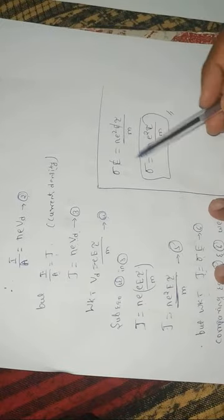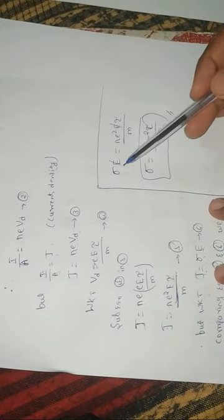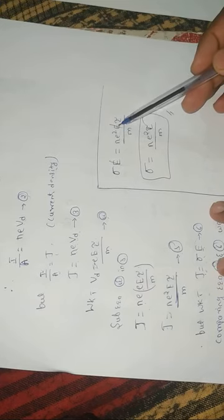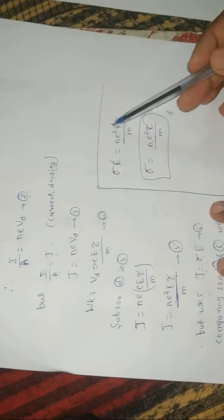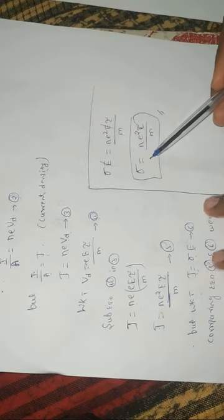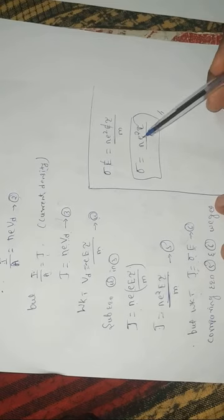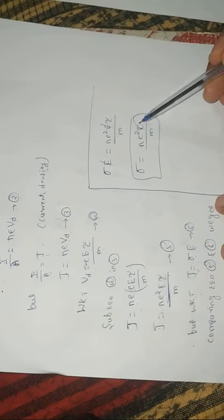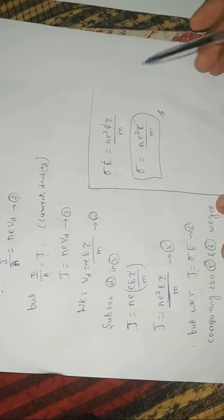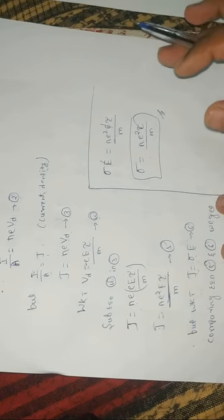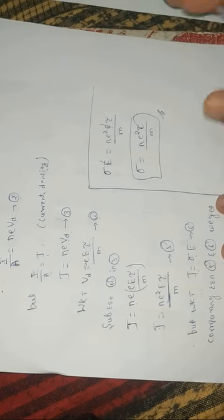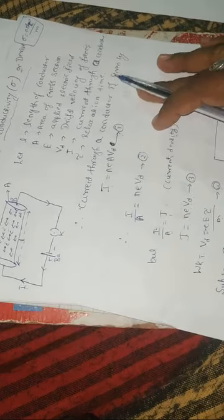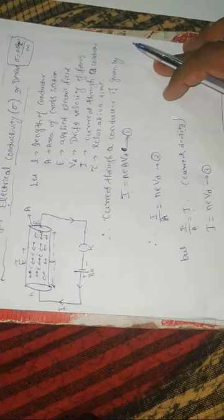The relation between current density and electric field is J equals sigma into E. Comparing both equations, sigma into E equals n e squared into tau divided by m, so E cancels and sigma equals n e squared into tau divided by m. This is the equation for electrical conductivity of a free electron — a very important derivation.